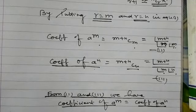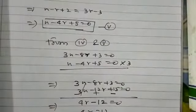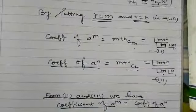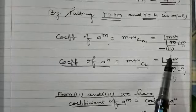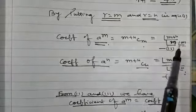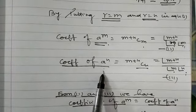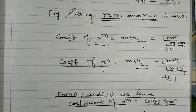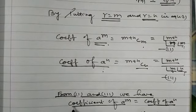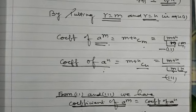Coefficient of a to the power m equals factorial(m+n) divided by factorial(n) times factorial(m), and coefficient of a to the power n equals factorial(m+n) divided by factorial(m) times factorial(n). Therefore, from these two results, the coefficient of a to the power m is equal to the coefficient of a to the power n. Hence proved.